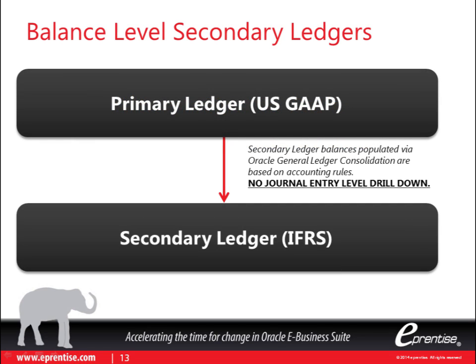One of the uses for a balanced-level secondary ledger is when you need to report only a period end on a different basis. One of the prime examples is going from U.S. GAAP to IFRS. U.S. GAAP and IFRS have actually been converging as the years go by. However, there are still significant differences between U.S. GAAP and IFRS, and some of those differences will probably never go away.